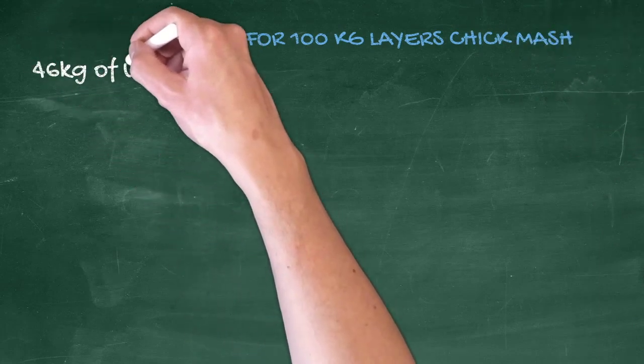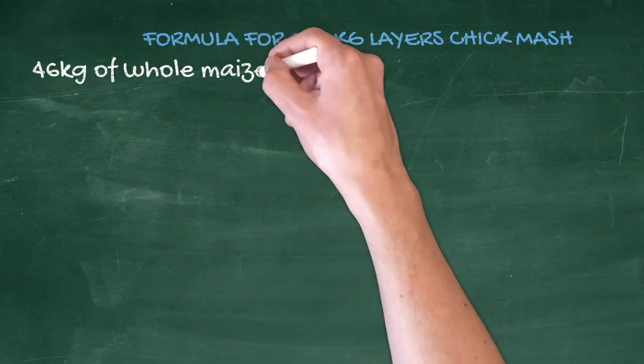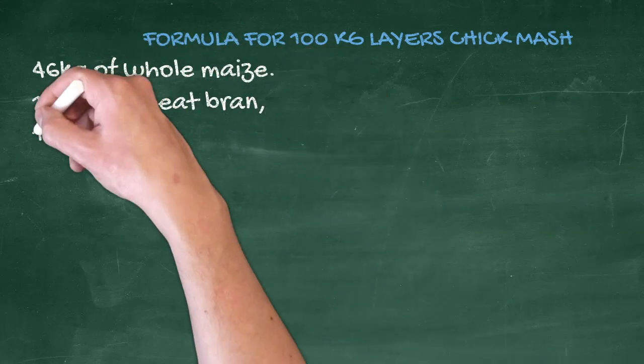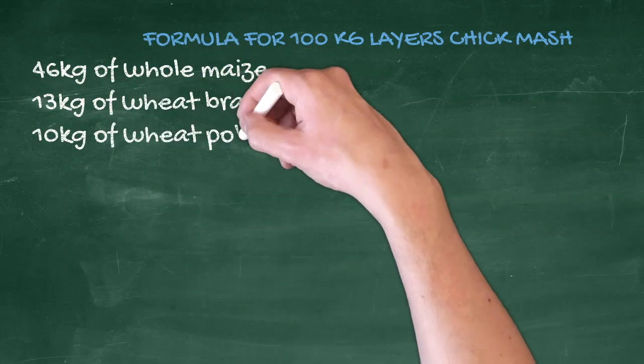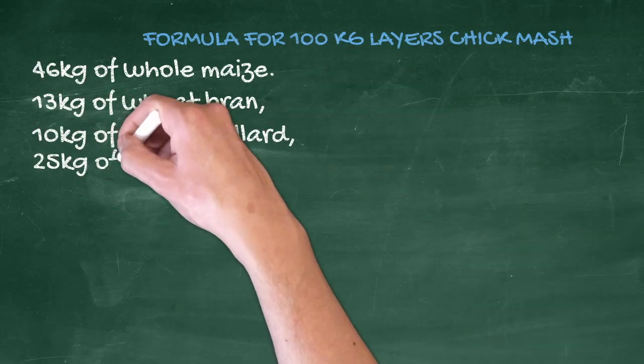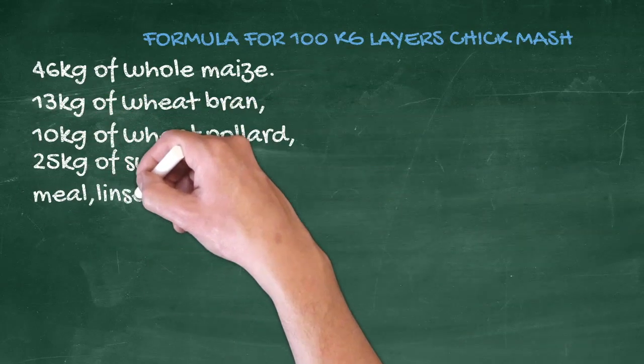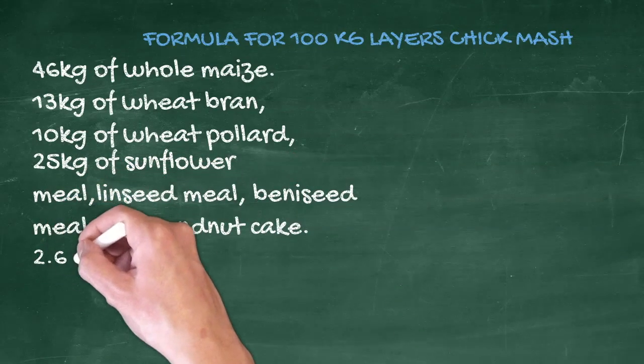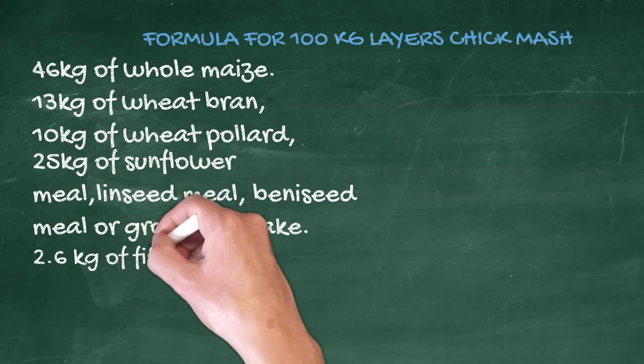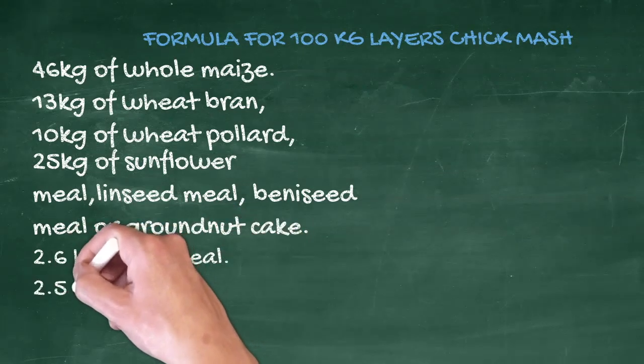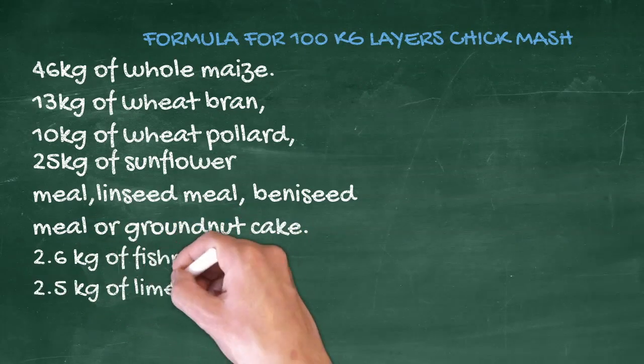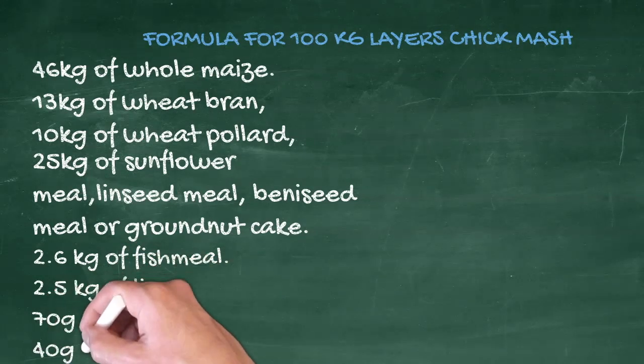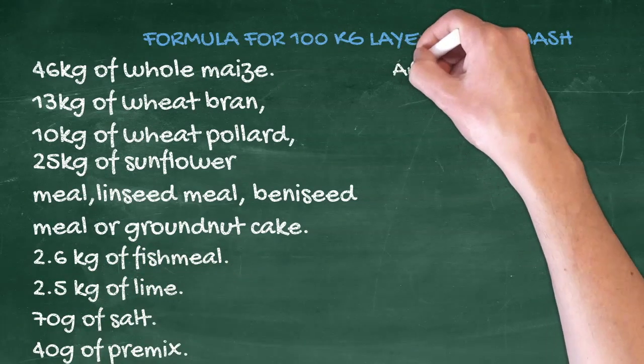The following ingredients can be used to make a 100 kg bag of layer chick mash: 46 kg of whole maize, 13 kg of wheat bran, 10 kg of wheat pollard, 25 kg of sunflower meal, linseed meal, or groundnut cake, 2.6 kg of fish meal, 2.5 kg of lime, 70 g of salt, 40 g of pre-mix.